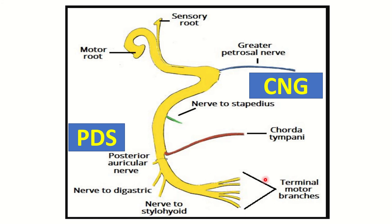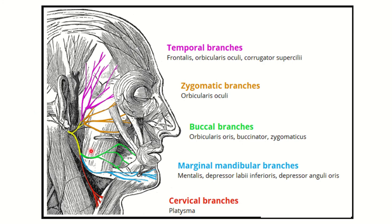After the stylomastoid foramen branches, there are five important terminal branches of the facial nerve. The mnemonic is 'Two Zombies Broken My Car': temporal, zygomatic, buccal, marginal mandibular, and cervical. We can see these five terminal branches on the diagram — temporal, zygomatic, buccal, marginal mandibular passing along the mandible, and the cervical branch.